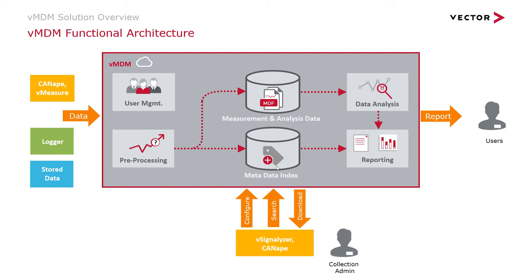Metadata describes, for example, the vehicle type, the characteristics of the engine, information of test drives and much more. For user management, the roles of users are defined — standard users, collection administrators, system administrators. Here you also define the access rights to the collections, like upload and download rights, read access and so on.